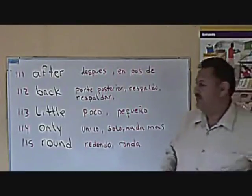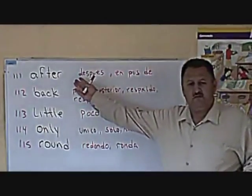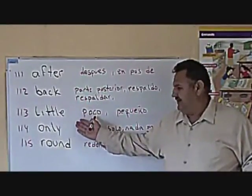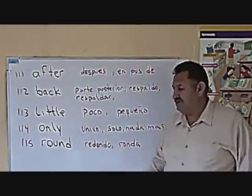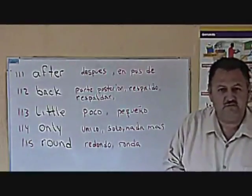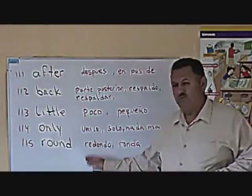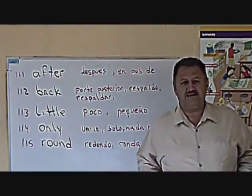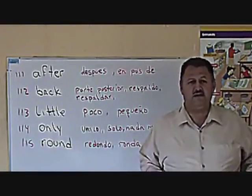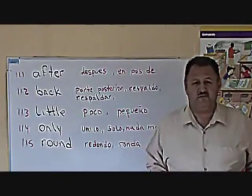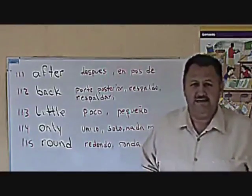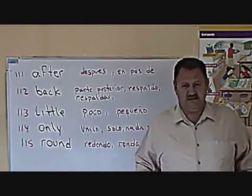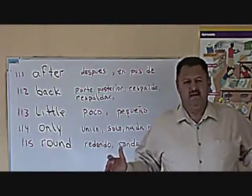One more time: 111 — after. 112 — back. 113 — little. 114 — only. And 115 — round. By now you will have memorized 115 of the 500 most common words in English. I know you've memorized 110 already. Excellent!